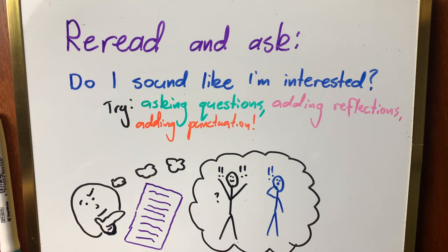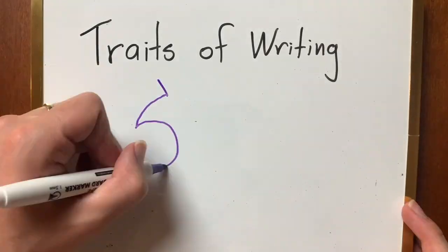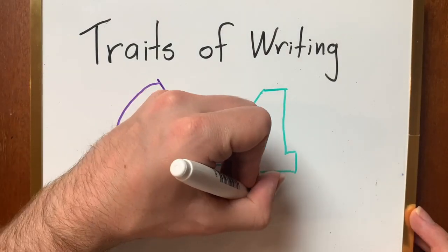Reread, revise, and make it sound like you're interested and care about your writing. This is how voice can elevate your writing, make it more engaging, and make your reader want to read your work. Traits of writing, 6 plus 1, it's what good writers do!